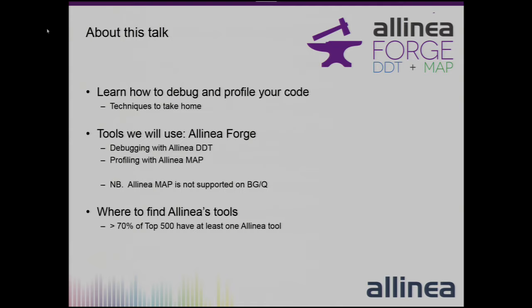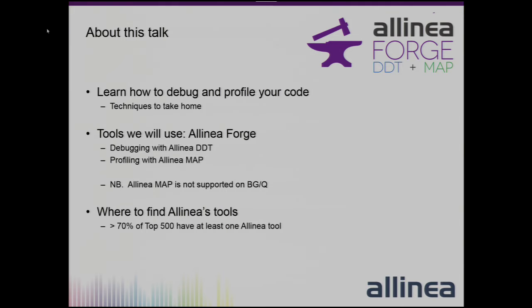MAP is not on the BlueGene queue systems here, but it is available on Cooley and a number of other systems you've probably got remote access to. DDT is on all of the BlueGene systems. You can find Alinea tools on roughly 70% of the top HPC machines out there, so there's a good chance you've already got access to them.